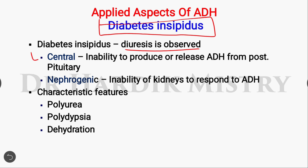It includes the central cause and the nephrogenic cause. In the central cause, there is an inability of the posterior pituitary gland to release the ADH hormone. In the nephrogenic cause, there is an inability of the kidneys to respond to ADH.